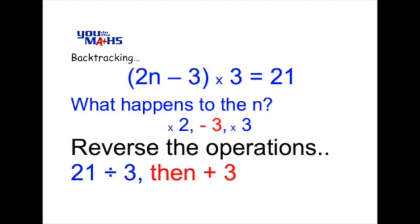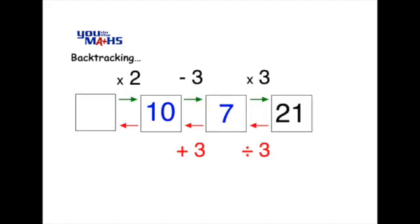Now the next operation we performed was to subtract 3, remembering we're going in reverse now. The opposite of that is to add 3. So that operation will go below the next red arrow as we move from right to left. And 7 plus 3 equals 10.